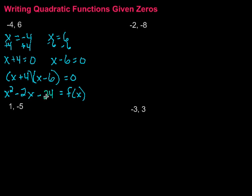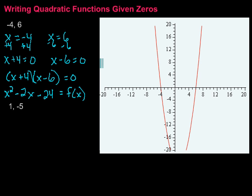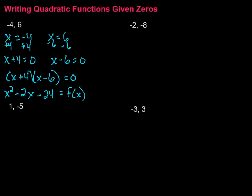So this function has the zeros negative 4 and 6. We can also check that — if I graph the function, it should cross the x-axis at negative 4 and 6. Sure enough, looking at the graph, it's crossing at 6 on one side and at negative 4 on the other. This function has those particular zeros.